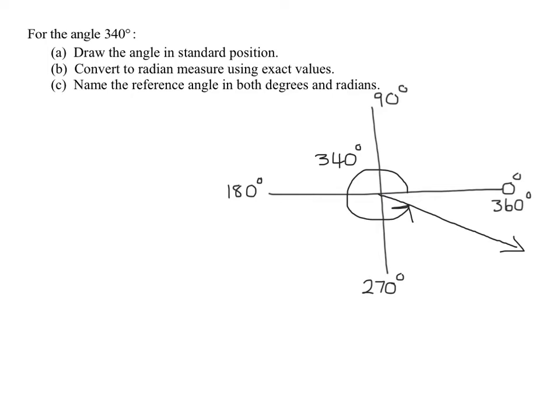Then it says convert it to radian measure. So remember, 340 degrees. What is the conversion? The conversion factor is pi radians equals 180 degrees. We're going to use dimensional analysis. Since I have degrees up here, I need degrees down here. So I have 180 degrees is pi radians.